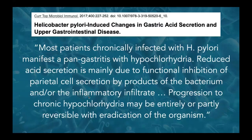H. pylori also contributes to hypochlorhydria. An article titled 'Helicobacter pylori-Induced Changes in Gastric Acid Secretion and Upper Gastrointestinal Disease' states that most patients chronically infected with H. pylori manifest a pan-gastritis with hypochlorhydria. Reduced acid secretion is mainly due to functional inhibition of parietal cell secretion by the products of the bacterium or the inflammatory infiltrate. Progression to chronic hypochlorhydria may be entirely or partly reversible with eradication of the organism. Clinically, H. pylori seems to have a similar impact to proton pump inhibitors in terms of the patterns seen on gastrointestinal testing.